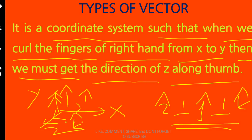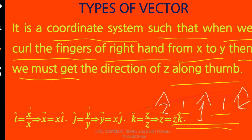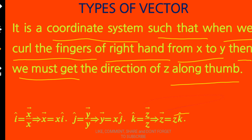For the orthogonal unit vectors: i-cap equals vector X divided by x, so vector X equals x times i-cap; j-cap equals vector Y divided by y, so vector Y equals y times j-cap; k-cap equals vector Z divided by z, so vector Z equals z times k-cap.